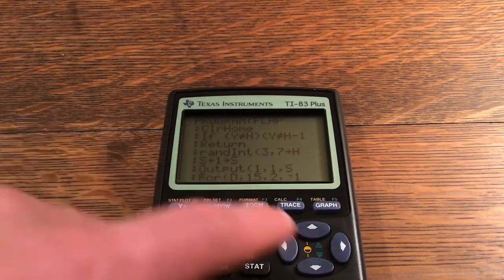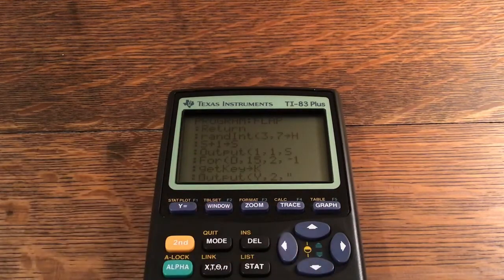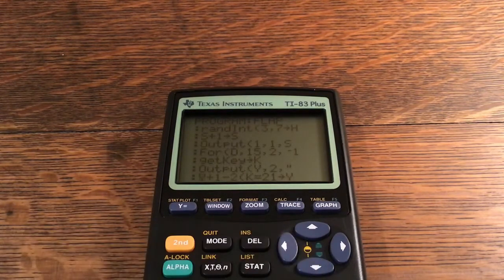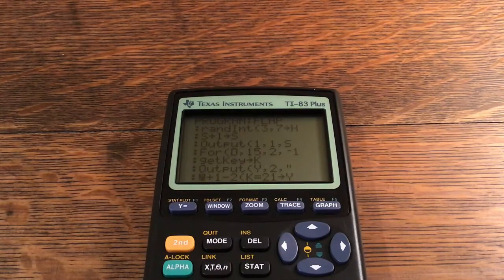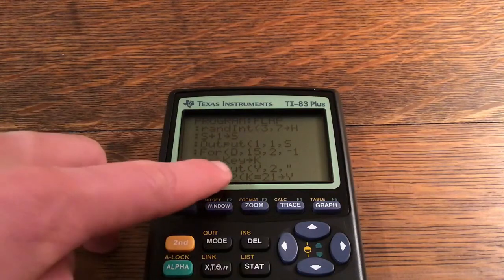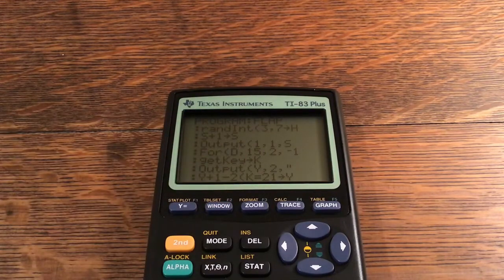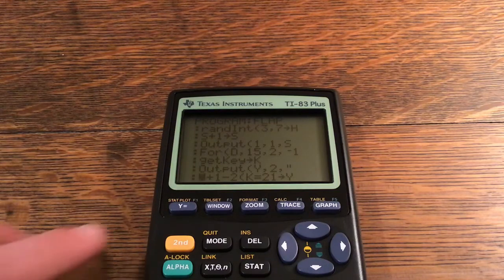getKey→K. Output(Y,2," "). Y+1-2(K=21)→Y. So the reason that I add 1 and subtract 2 only if and only if K=21 is because I'm automatically assuming that you don't press the second button, which is 21, and you can change that and I'll go over that in just a second here.